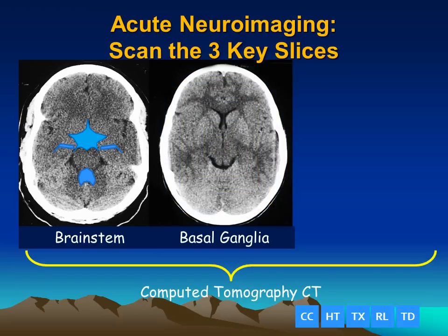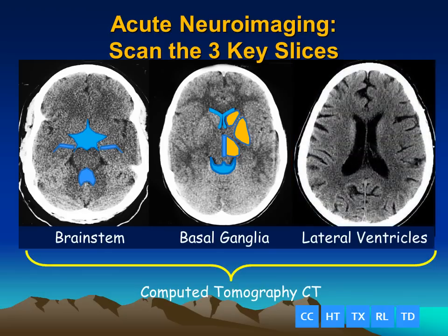At the level of the basal ganglia, we have the frontal horns, the third ventricle, and the smile shape of the quadrigeminal plate cistern. We can also see the gray matter of the head of the caudate nucleus, the lenticular nuclei, and on either side of the third ventricle, we have the thalamus.